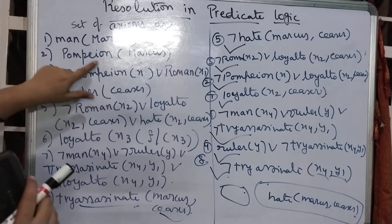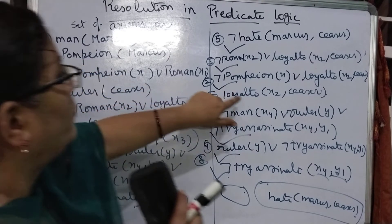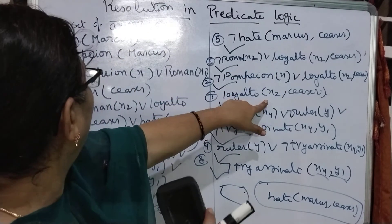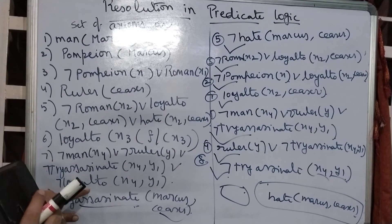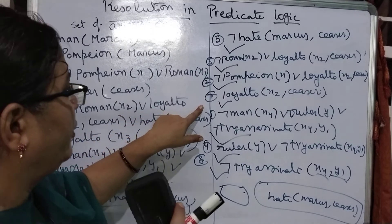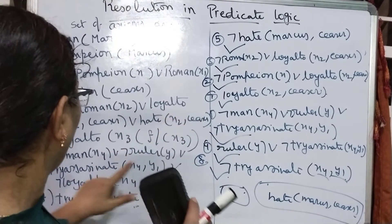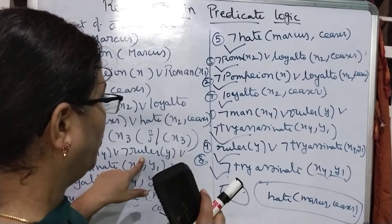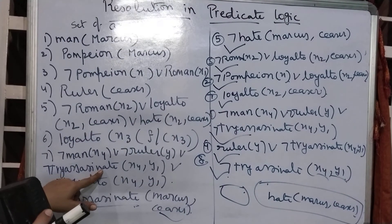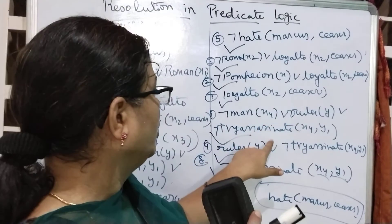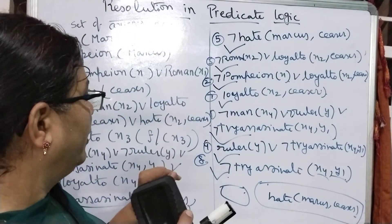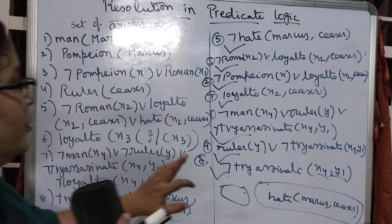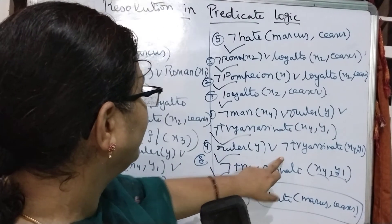Is there anything that can get resolved with loyal_to? The seventh axiom has negation loyal_to. So added 7 — loyal_to and loyal_to get cancelled. The rest of the things from the seventh axiom are: negation man(x4), negation ruler(x4), or negation try_assassinate(x4, y1) — three things we got. Ruler is there — already axiom 4 applied — so ruler can get cancelled. The resultant is negation man(x4) or negation try_assassinate(x4, y1).